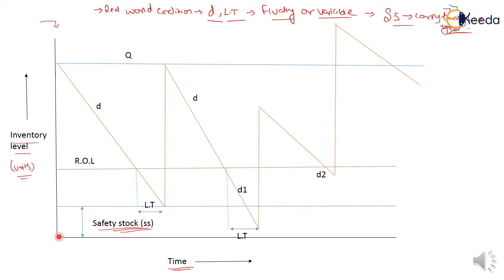At time equals to 0, our organization builds up the inventory instantaneously and reaches to the maximum inventory level Q. After this, the inventory item is consumed with the consumption rate small d and reaches to the reorder level. The reorder level is the point at which a new order is placed. The inventory level continues to be consumed and is then built up again to the maximum inventory level Q.